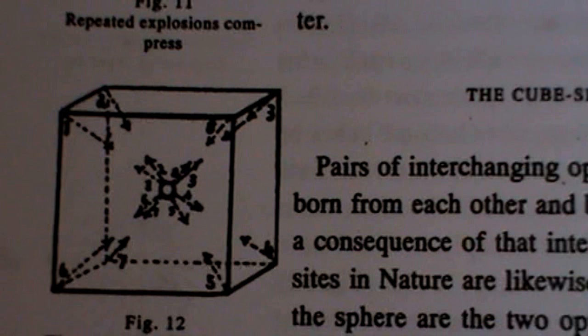Pairs of interchanging opposed conditions are born from each other and become each other as a consequence of that interchange, as opposites in nature are likewise born. The cube and the sphere are two opposites of form from which all forms of things are born. They are the only forms ever created being father and mother of all forms.